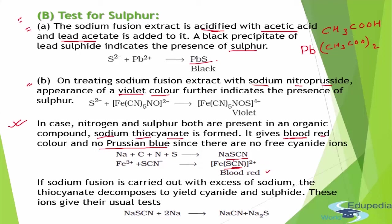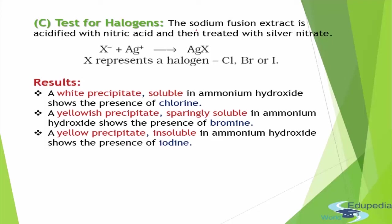In that case, we take the sodium fusion extract and heat it with excess sodium metal. When heated with excess sodium, sodium thiocyanate will decompose into sodium cyanide and sodium sulfide, and these will then give their respective tests for cyanide or sulfide. So be very careful while ruling out the presence of nitrogen if Prussian blue color is not obtained.